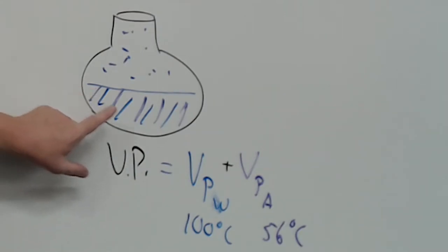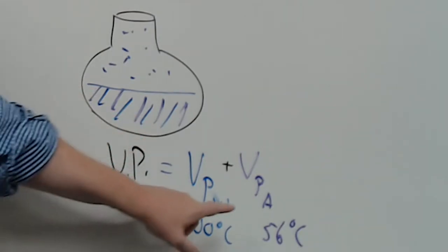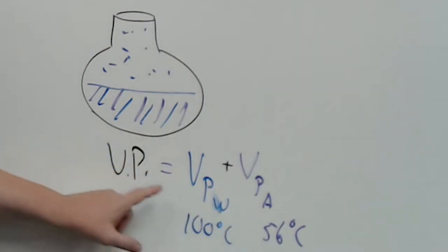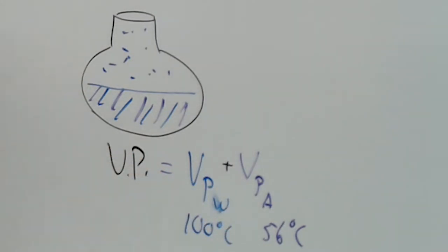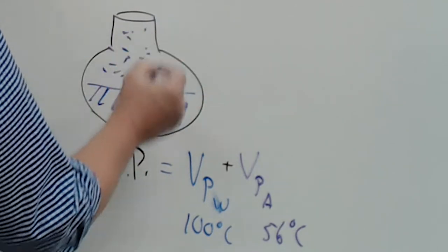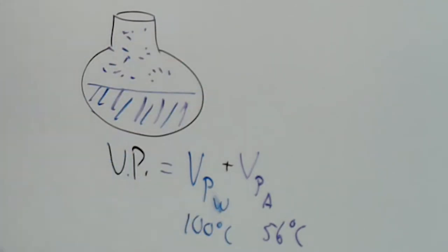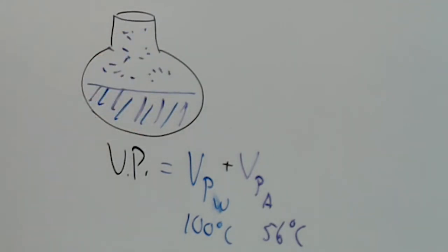In the mixture, the component with the lower boiling point, if they're 50-50, will have much more vapor than the component with the higher boiling point. So the vapor ratio is no longer 50-50. What happens to the boiling point then?